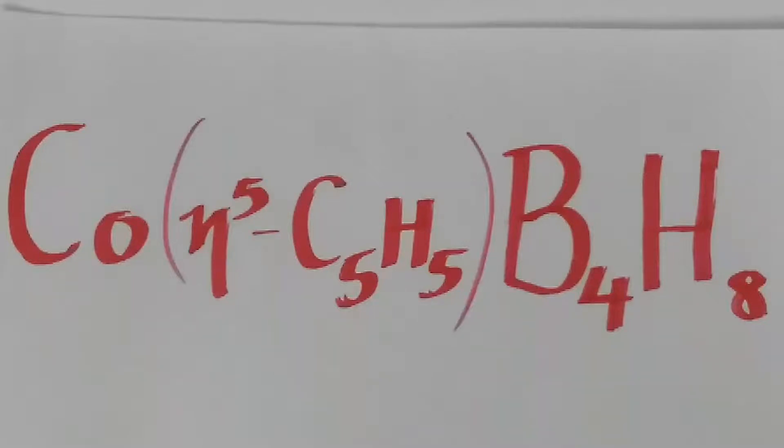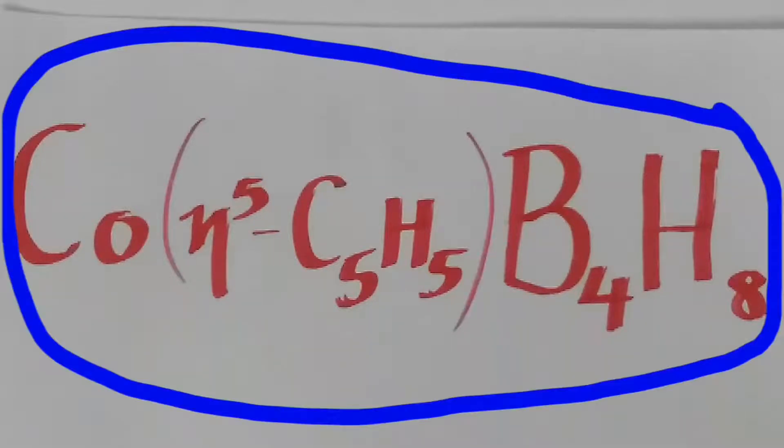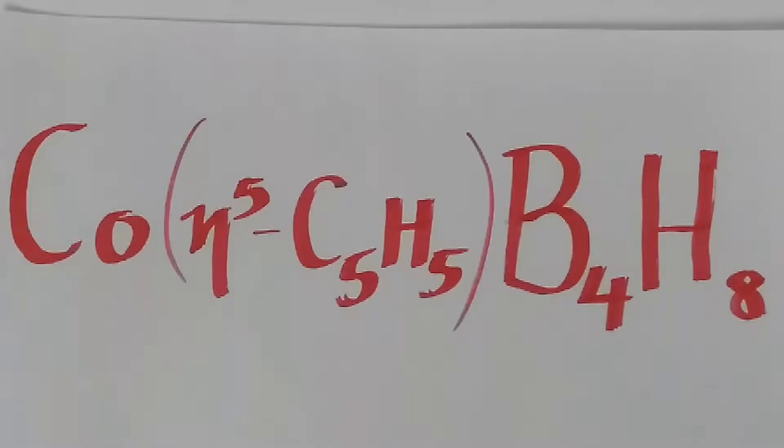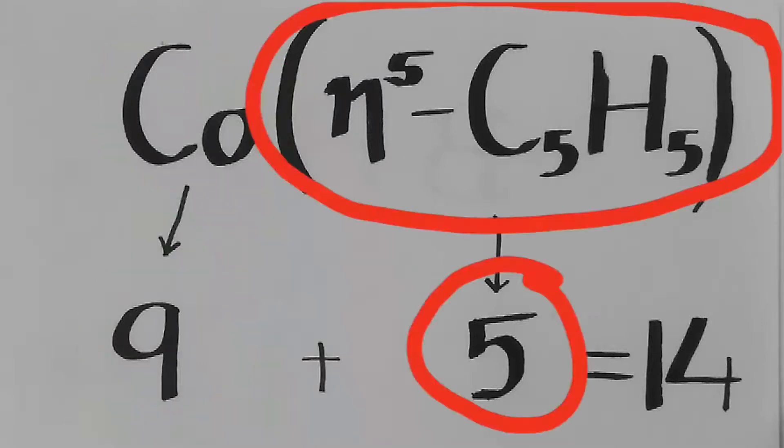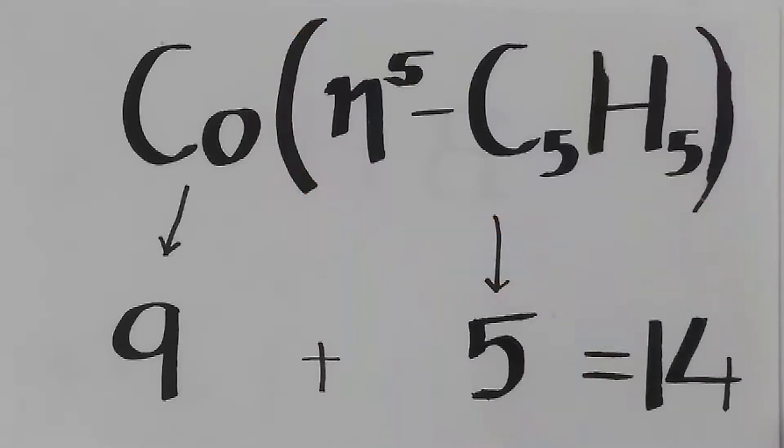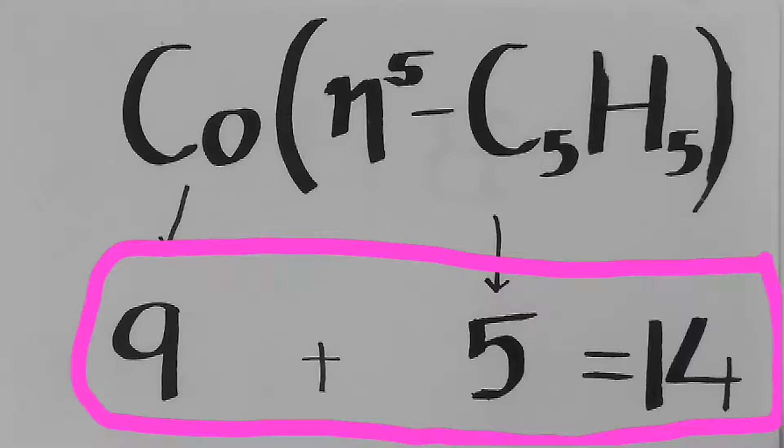First, we will consider this cobalt complex. We will try to substitute the cobalt η⁵-C₅H₅ part with an isolobal analogy. The valence electron for cobalt is 9, for η⁵-C₅H₅ the electron contribution is 5, so total electron is 14.